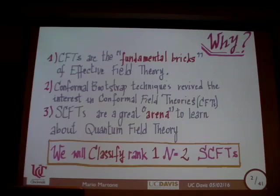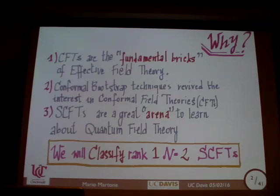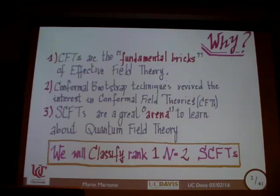One of the results we find is that the majority of N=2 superconformal field theories we find do not seem to have any Lagrangian description — the so-called non-Lagrangian theories. The only reason we can see those is because we can use the tools provided by conformal invariance and supersymmetry. Once we have those tools, we see that there are many more quantum field theories than we would have expected.